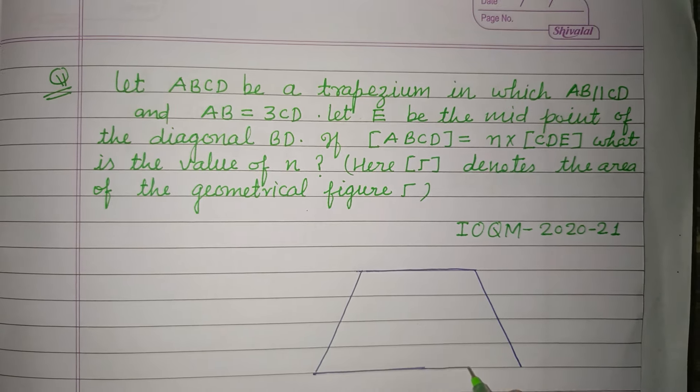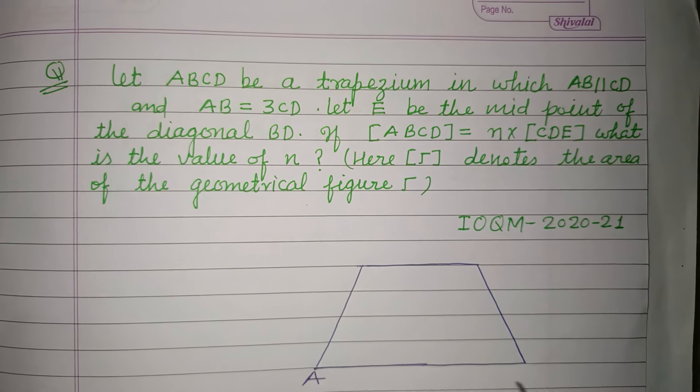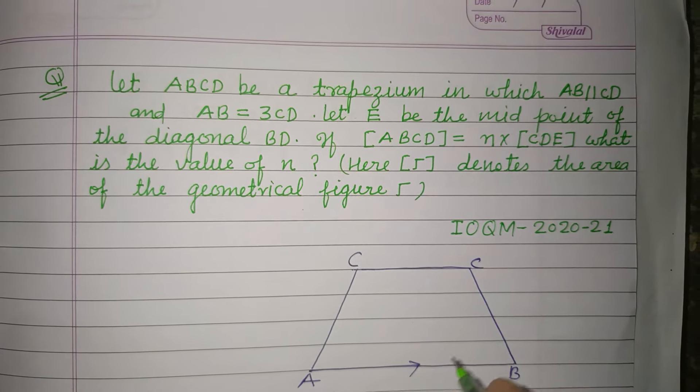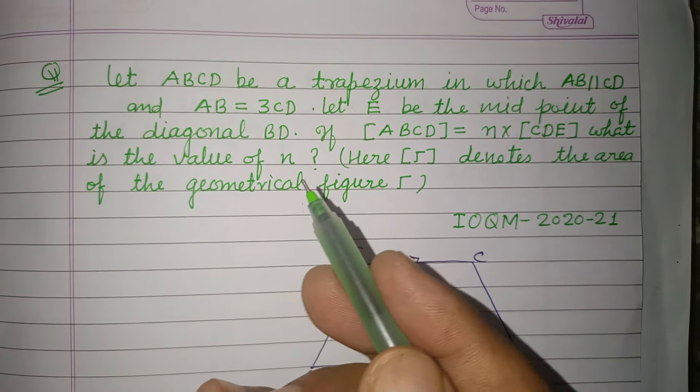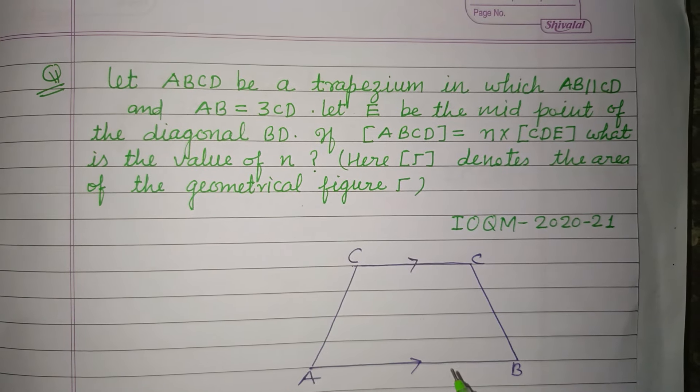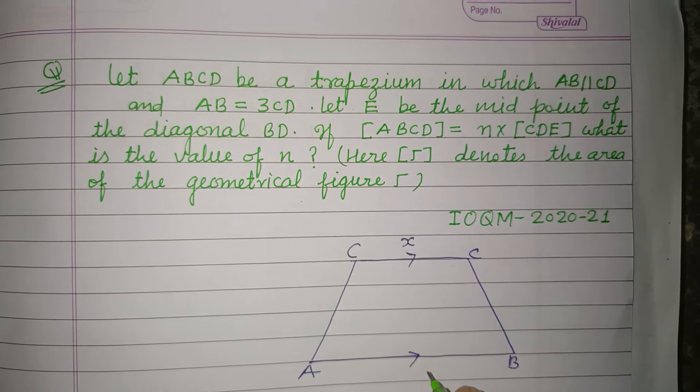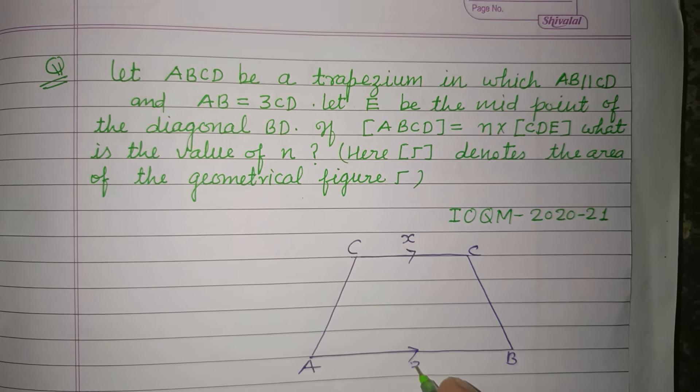ABCD, in which AB is parallel to CD and AB is three times CD. If CD is x, then AB is 3x.